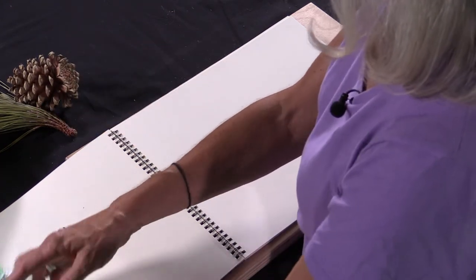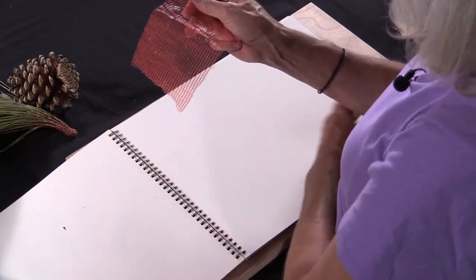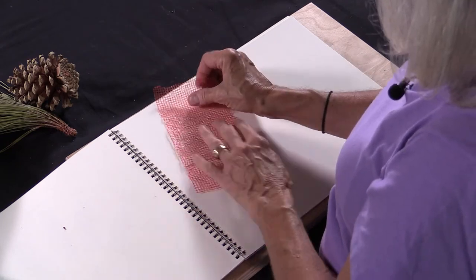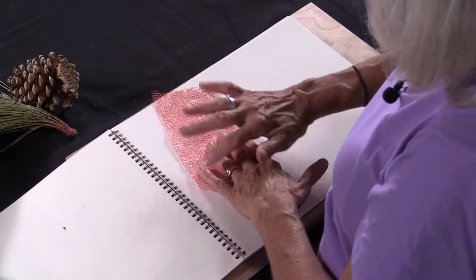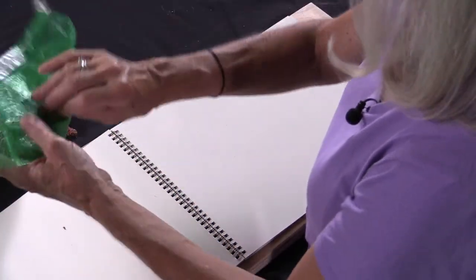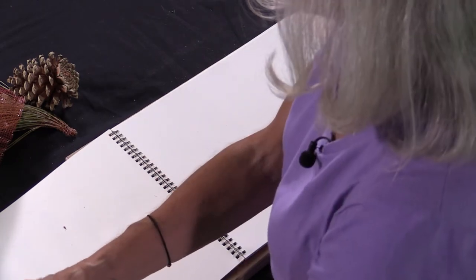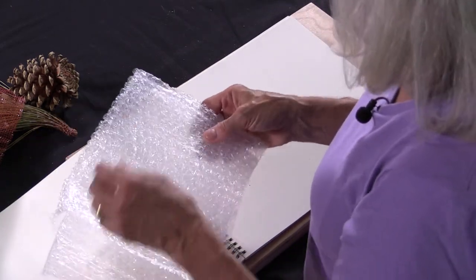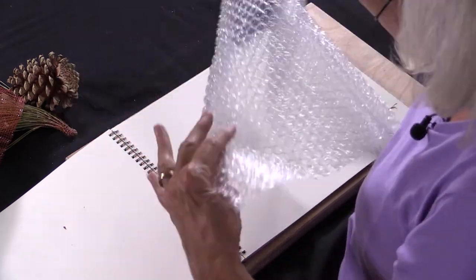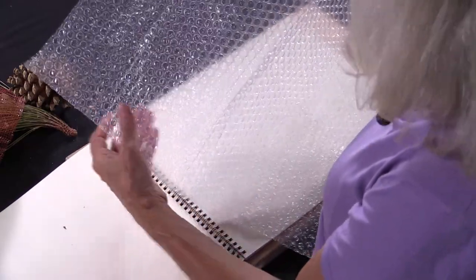Going through my recycling, I've found other things that have texture, like this produce bag. It has a nice texture of a weaving. Here's another one in green. And here's something you might have around the house—bubble wrap. This has an interesting texture, too, kind of like polka dots.